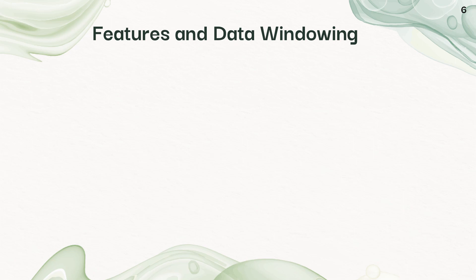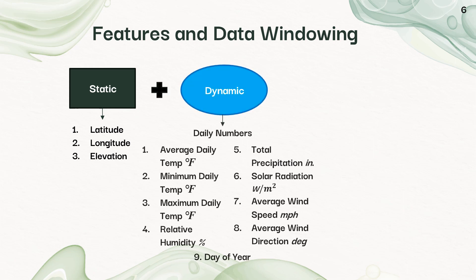So I'm going to talk a little bit about features I used and the data windowing process, which is sort of combining data into packets for the model. And so I started off with static data, which is just the location data and elevation, and then I add in the dynamic data. I concatenate that on. There are all the daily numbers. There's nine of them. I'm not going to talk about each one, but all of them are significant to daily temperature prediction.